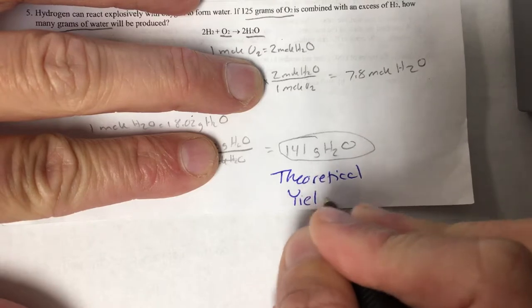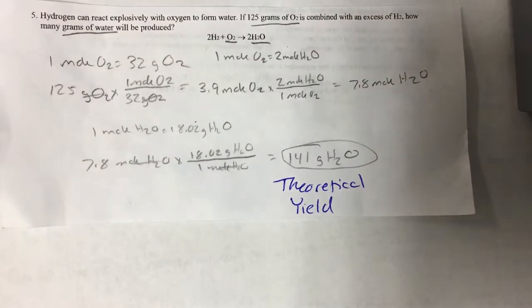what we can call theoretical yield. It's what would happen in a perfect world if there were no loss of energy in the system, if everything was perfect, you measured out all your reactants perfectly and everything. That's what you're supposed to get - 141 grams of water.